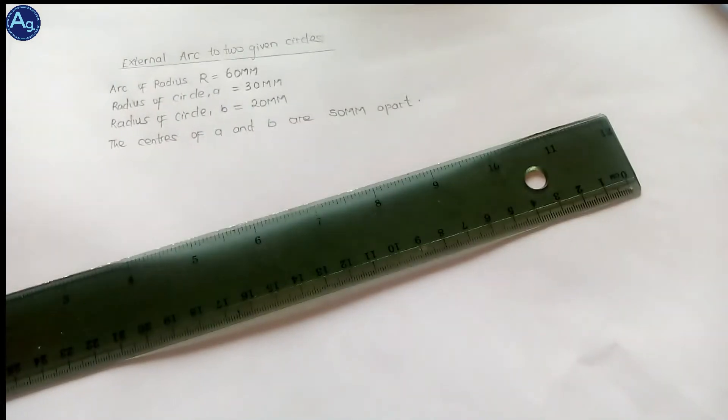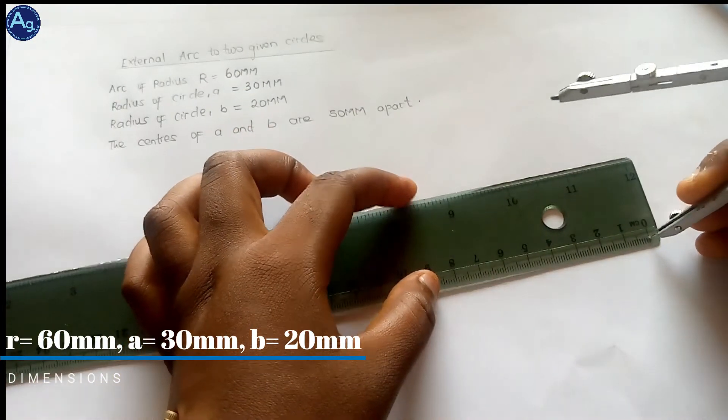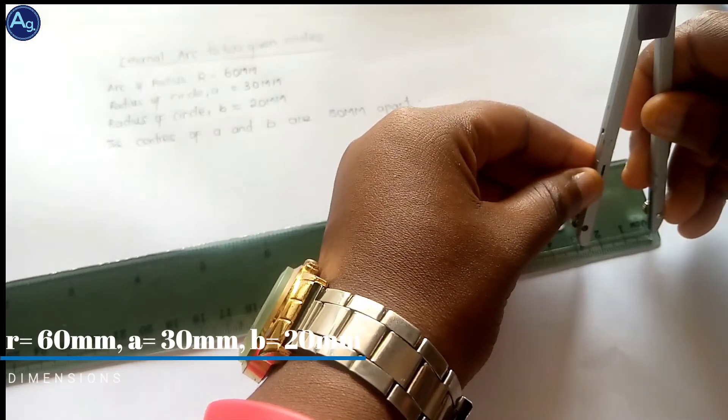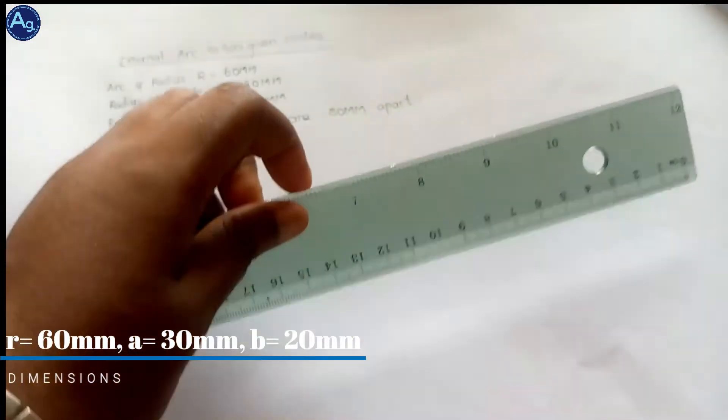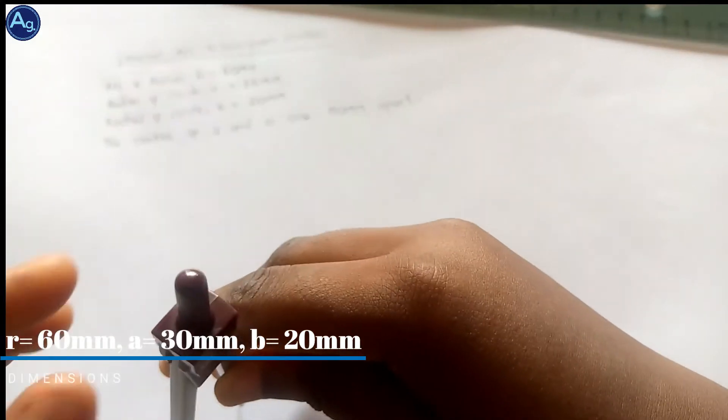Now, to draw an arc of a circle to touch two given circles externally. We are given the radius of the two circles — the first one has a radius of 30 millimeters. Measure that out.